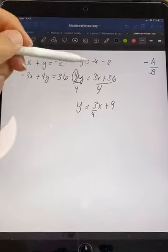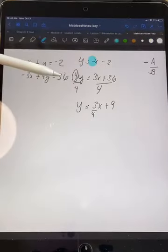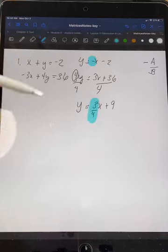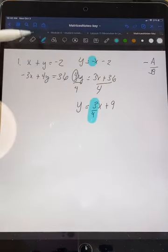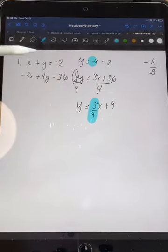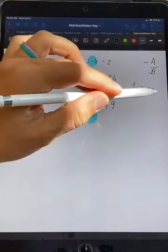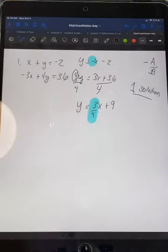So this is all we need to know. For the first one, our coefficient is negative 1. For the second one, our coefficient is 3 fourths. They have different slopes. So these are two different lines with two different slopes. They will eventually cross somewhere, so it will have one solution. That is all you need to do for that one.